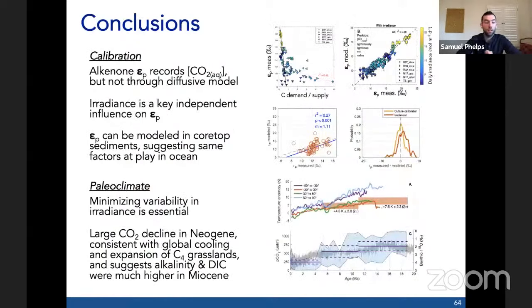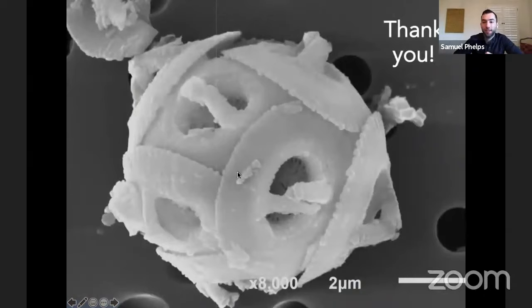Just to conclude, what I've shown is that alkenone EP records CO2 variations, but not through the diffusive model. Irradiance, as others have demonstrated before, is a key independent influence on EP. EP can be modeled in core top sediments, suggesting the same factors that are at play in the ocean. For paleo reconstructions, minimizing variability in irradiance is essential, and developing a proxy for irradiance will be a major contribution in my view. We find a large CO2 decline in the Neogene consistent with the expansion of C4 grasslands and global cooling. Pairing this with boron isotope pH records suggests that alkalinity and DIC were much higher in the Miocene compared to today. Thank you very much. With that, I'm happy to take any questions.